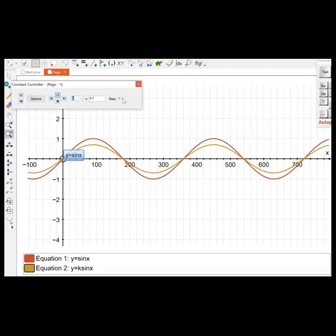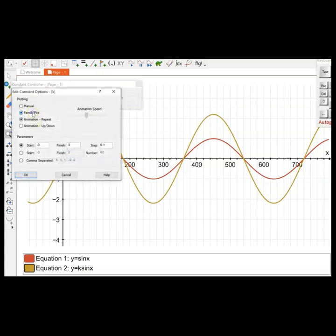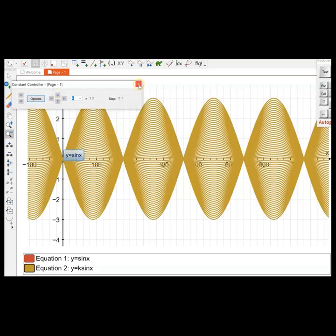The step has been put on 0.1 to show a slower movement of the graphs. We'll try putting it on a family plot where you can see various constants applied to the stretches. This is how it looks—isn't that beautiful?